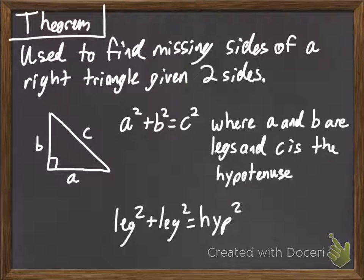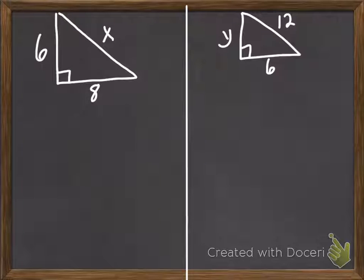If you take legs squared plus legs squared, it will equal your hypotenuse squared. And that's very beneficial for us because it means we can find missing sides if we know two of the sides. So, let's actually do some math with some numbers.